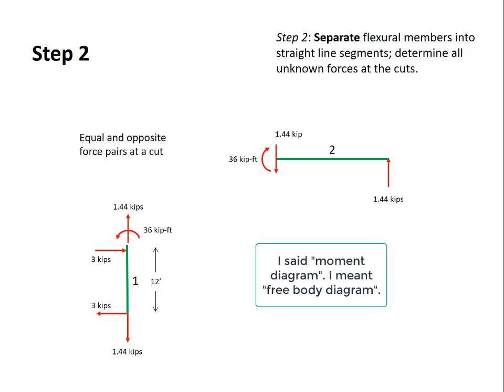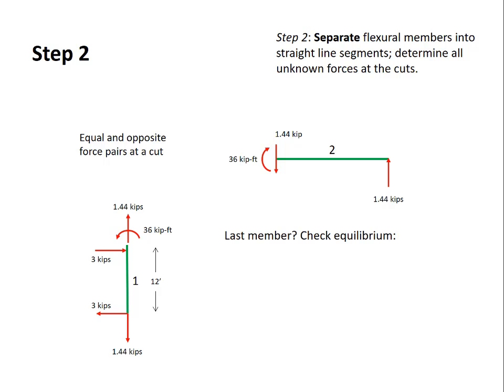Looking at the diagram from member 1 there's no more unknowns and this will always be the case when you reach the last member of a structure. If you're on the last member check equilibrium. Horizontal equilibrium: the 3 kip force at one end is 3 kips at the other end. For vertical equilibrium the force of 1.44 kips at one end is equal to 1.44 kips in the other direction at the other end.